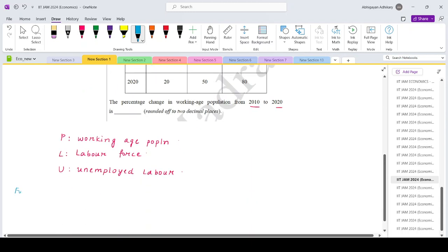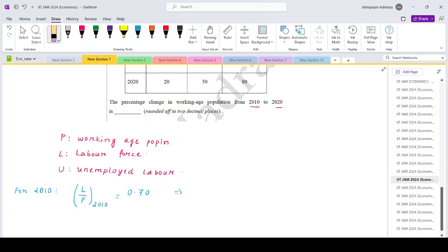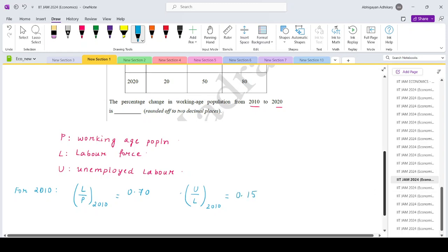So let's start. For 2010, labor force participation rate is 70% or 0.7. From here I can say, and the unemployment rate which is U by L for 2010 is 0.15, 15%.